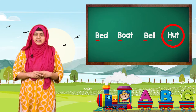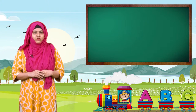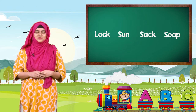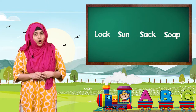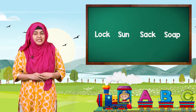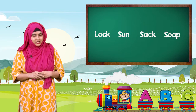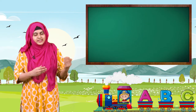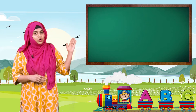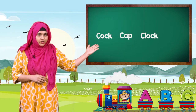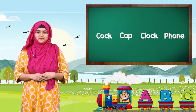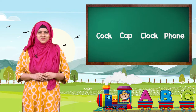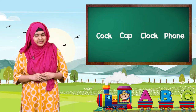The second group of words are Lock, Sun, Sad, and Soak. Can you find the odd man out? Yes, the odd man is Lock. Now let us move to the next set of words. The words are Cock, Cap, Clock, and Phone. Can you guess the odd man out? Yes, the odd man is Phone.